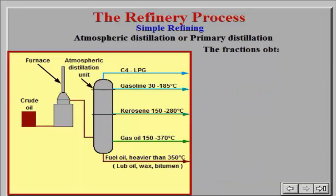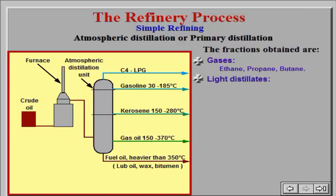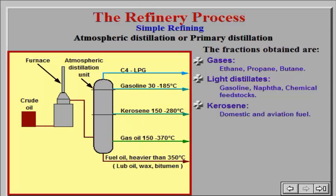The fractions obtained through atmospheric distillation are: gases such as ethane, propane, and butane; light distillates such as gasoline, naphtha, and chemical feedstocks; kerosene for domestic and aviation fuel.